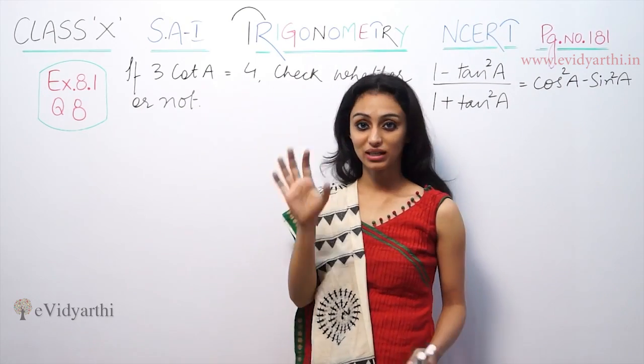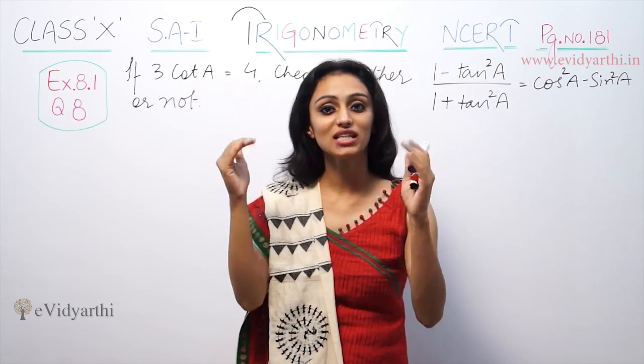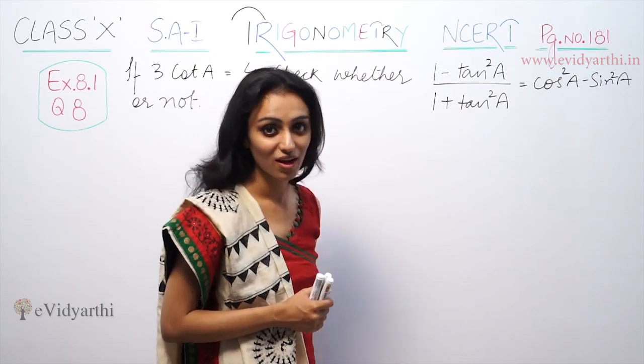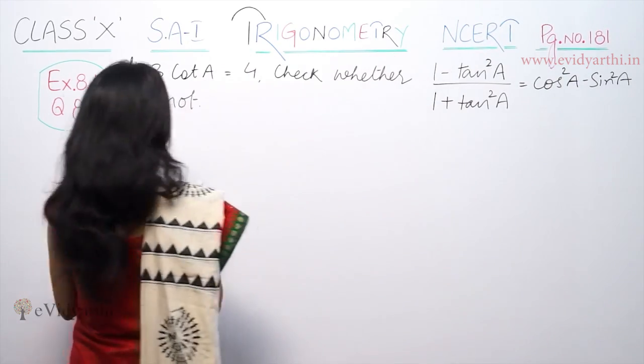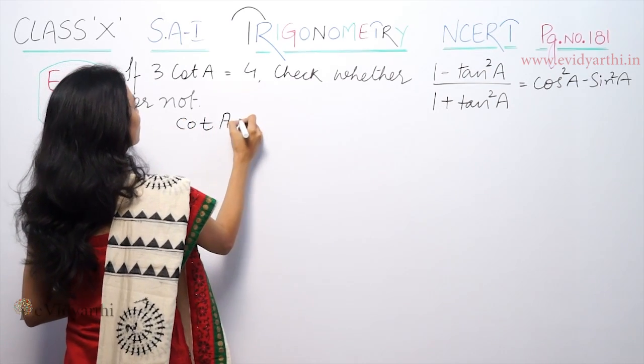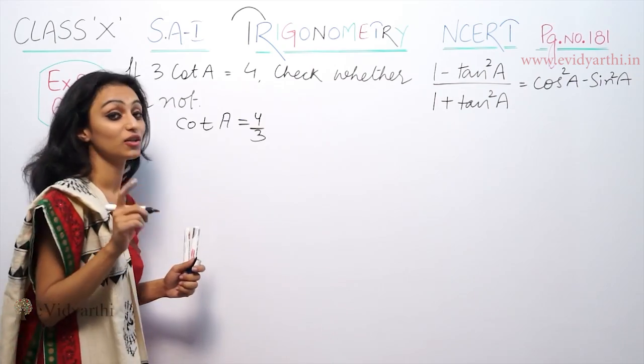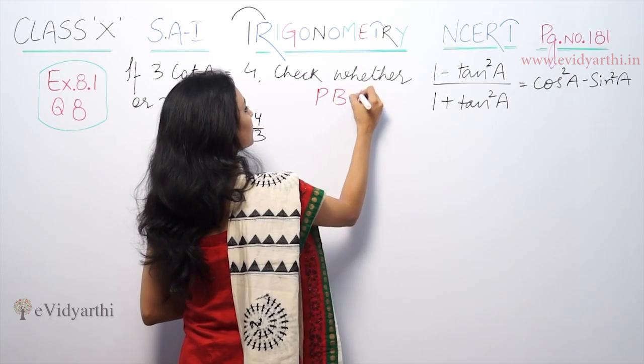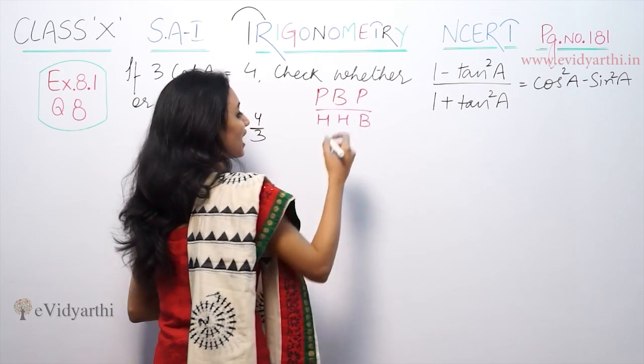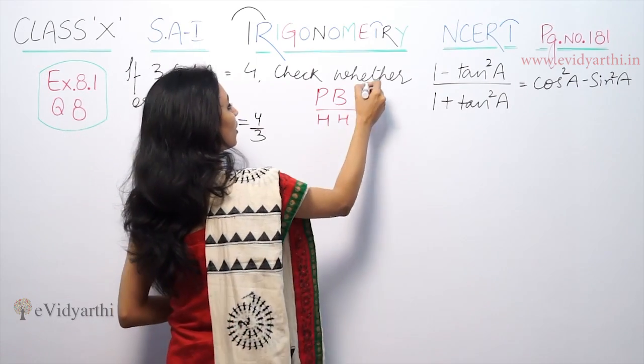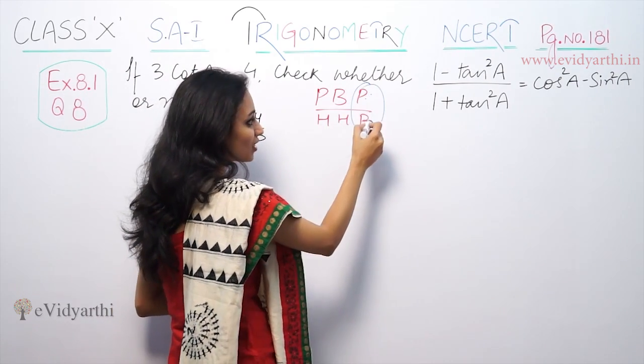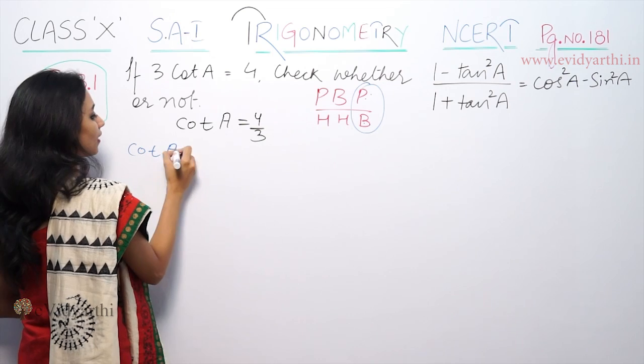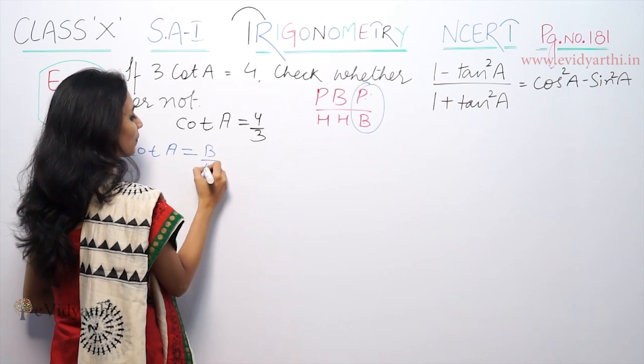First of all, we will draw the triangle with base B, perpendicular P, and hypotenuse H. Cot A is equal to base by perpendicular, so cot A equals B by P.